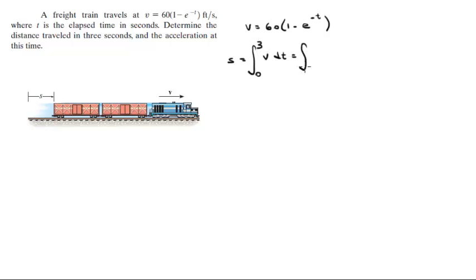So this is the integral from 0 to 3 of 60 times 1 minus e to the negative t dt, which is equal to 60 from 0 to 3 of 1 minus e to the negative t dt, which is equal to 60 times t plus e to the negative t from 0 to 3.